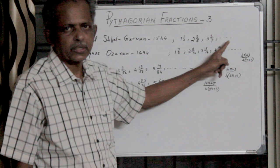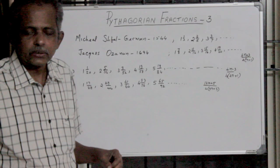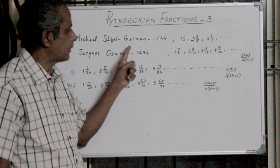The second series or sequence was developed by Jacos Ozana after 150 years, that means in 1694.